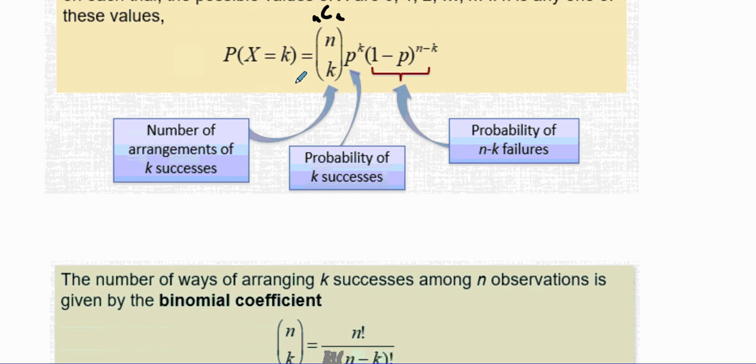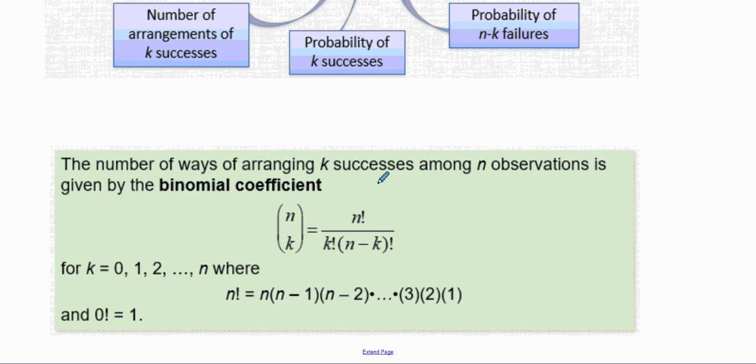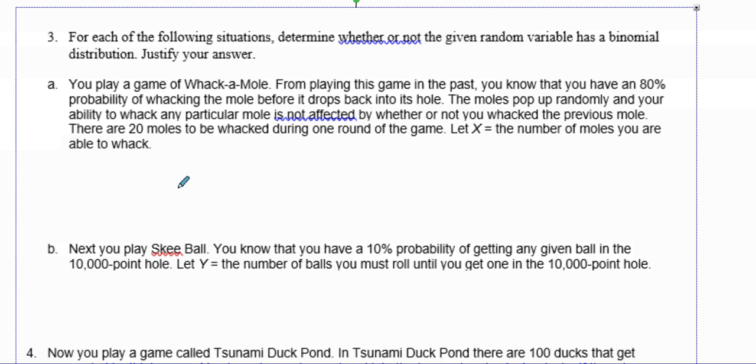If you're wondering where this binomial coefficient comes from, it comes from the combinations where you have N factorial over K factorial times N minus K factorial. Together it comes out to be your binomial coefficient - the number of ways of arranging K successes among N observations. Let's try a problem out.